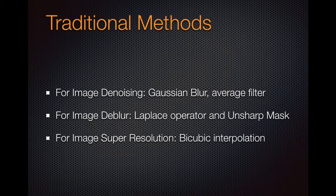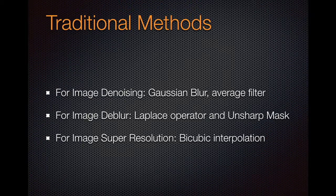In some traditional methods, we use a Gaussian blur average filter or other filters to denoise the images. For image deblurring, we use the Laplace operator and a sharp mask to sharpen the images. And we use bicubic interpolation to do super-resolution. But in fact, bicubic interpolation is not a super-resolution algorithm — it just increases the size of the images.